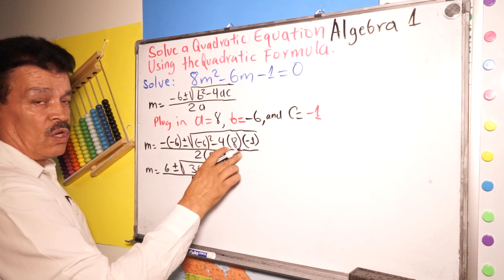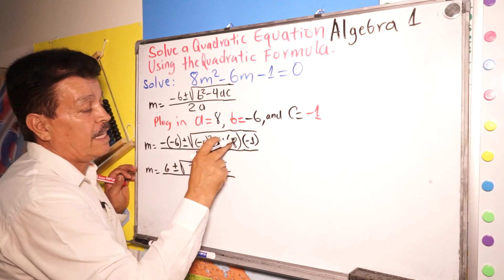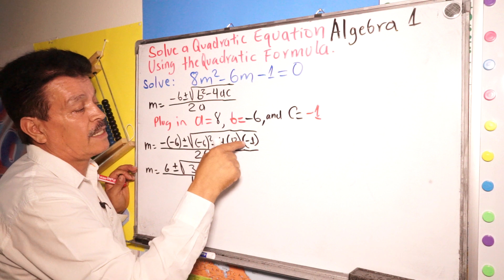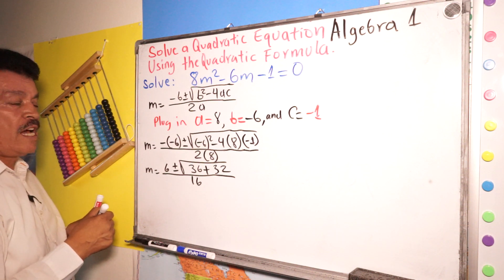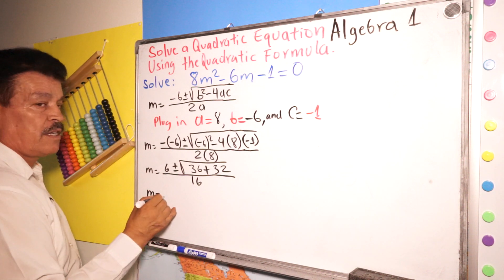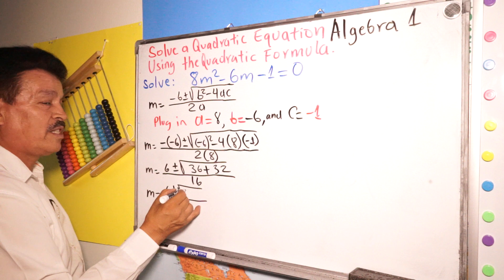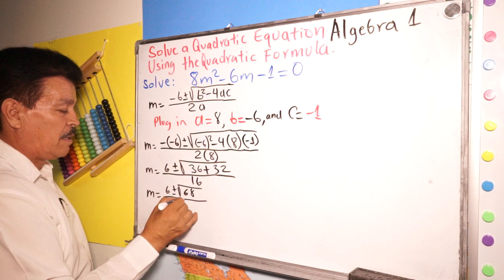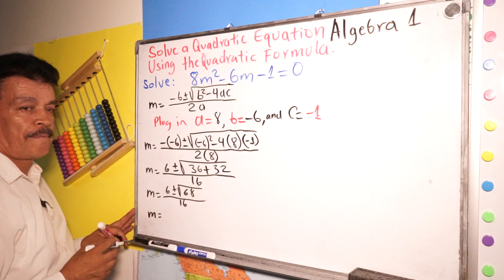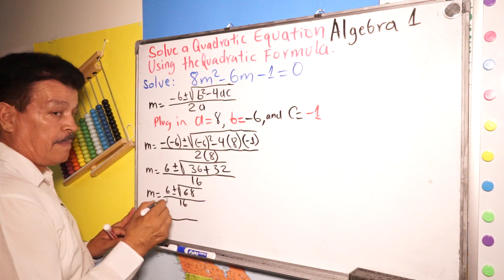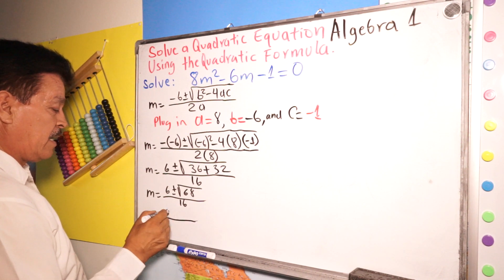36 minus 32, divided by 2 times 8 which is 60. Now, 4 times 8 is 32, times 1. Negative times negative is positive, so it becomes plus 32. Next step: add — 36 plus 32 is 68, divided by 60.